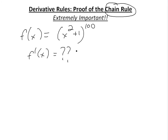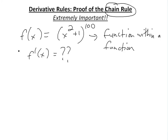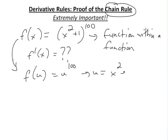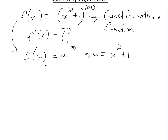We don't know what the derivative is because other rules didn't really cover how to get this, because the problem here is it's a function within a function. This could be written as f(u), where f(u) = u^100 and u = x² + 1. So we change variables so that f is a function of u and u is a function of x.